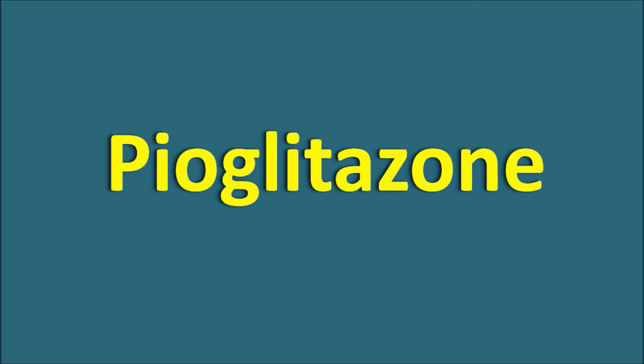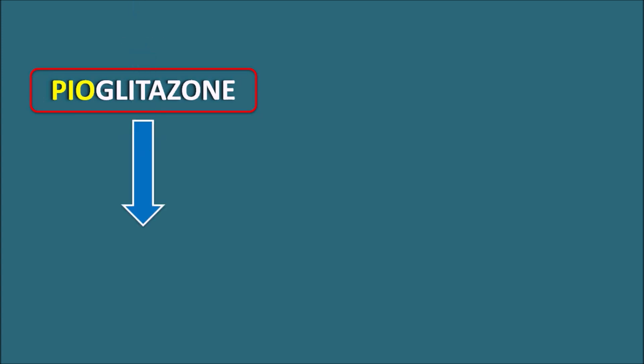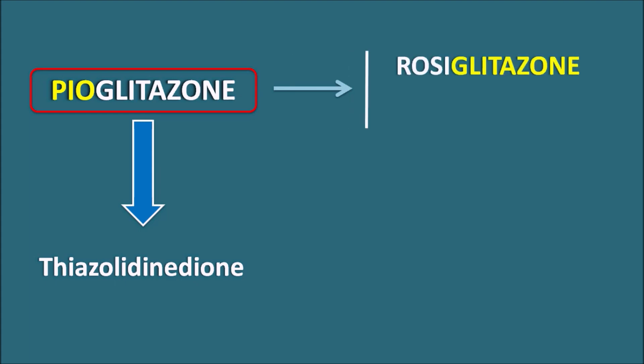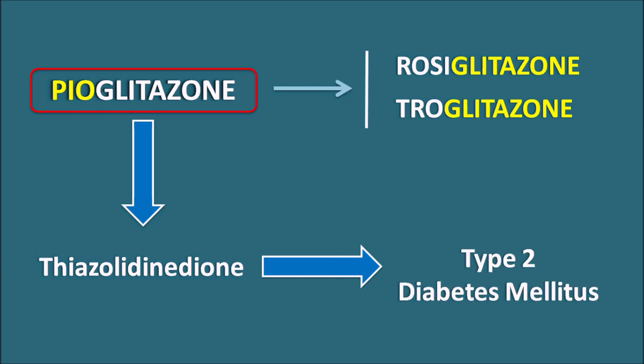Today we are going to discuss pioglitazone — its mechanism, side effects, precautions, and clinical use. By the suffix '-glitazone' we can identify this drug as a thiazolidinedione. Within this chemical category there are other drugs like rosiglitazone and troglitazone, but many of those have been withdrawn. Pioglitazone is still available and is useful in the treatment of type 2 diabetes mellitus.